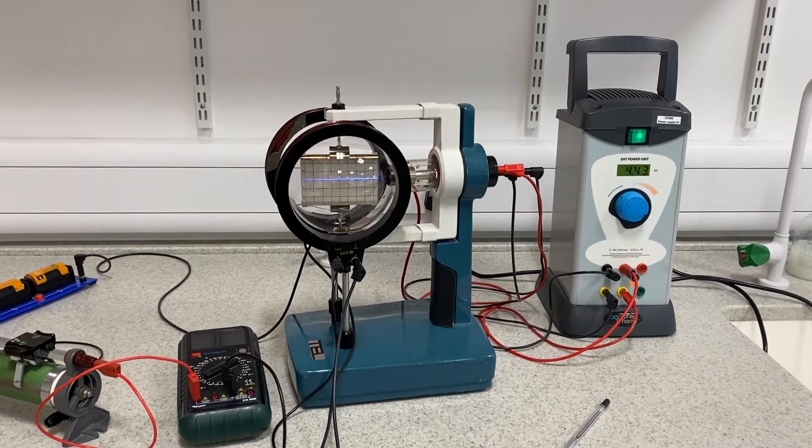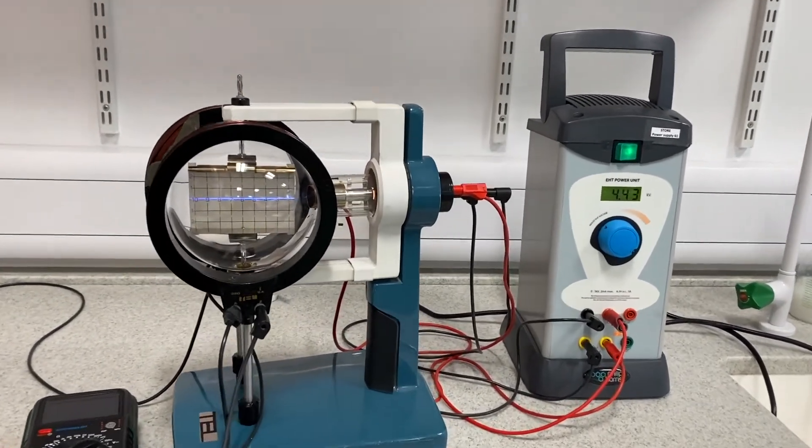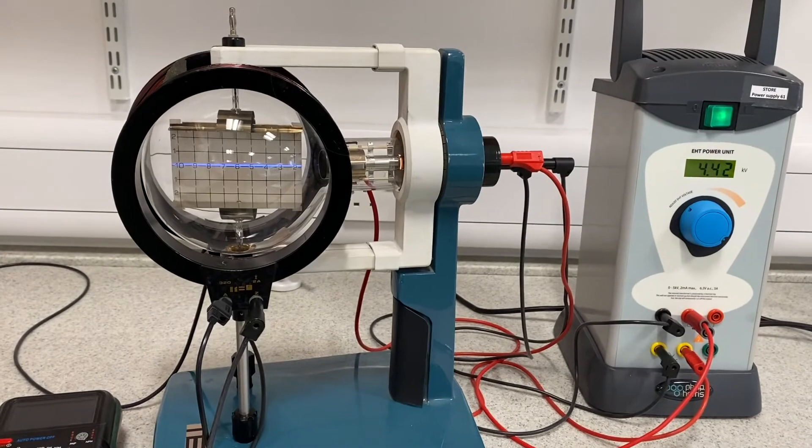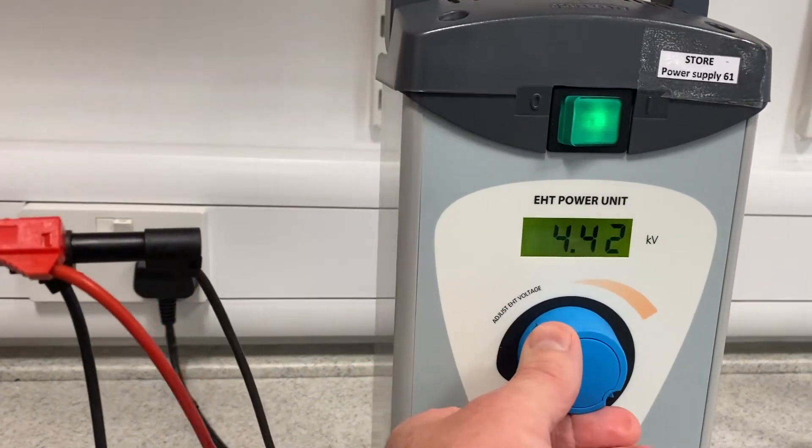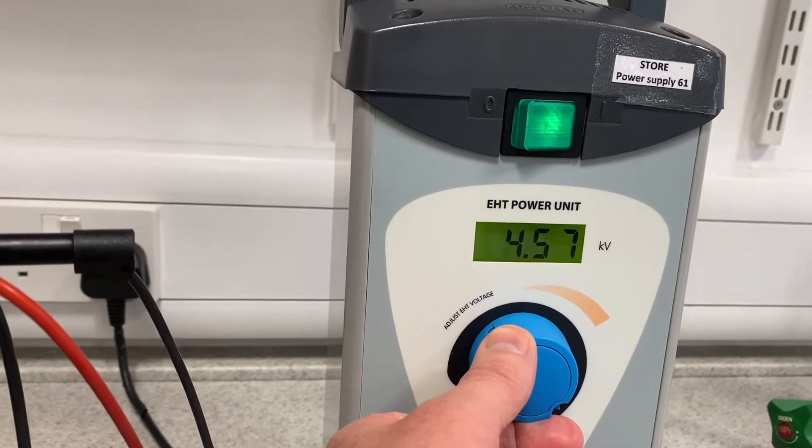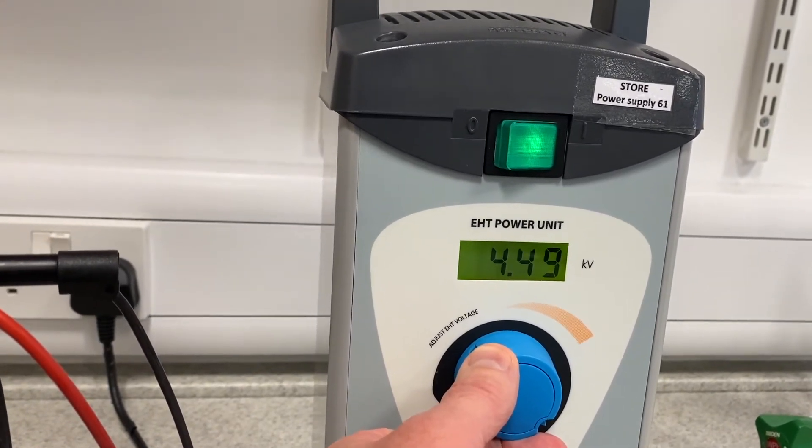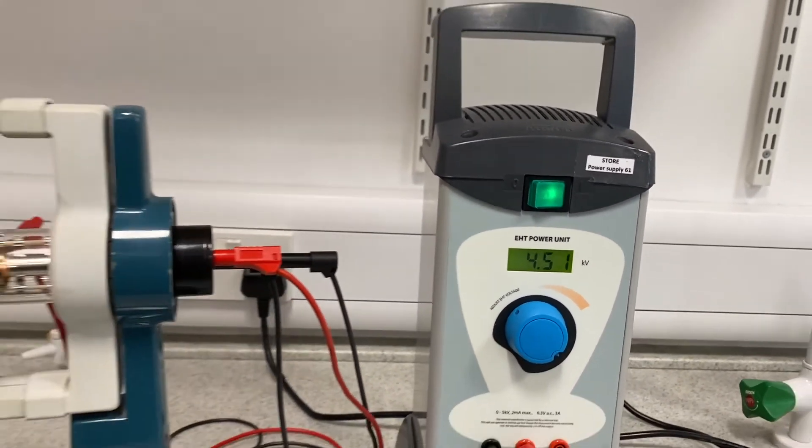Okay troops, we have our deflection tube set up, same as in the last video, with our 5,000 volt EHT supply. I'm wanting this at about 4,500 volts.